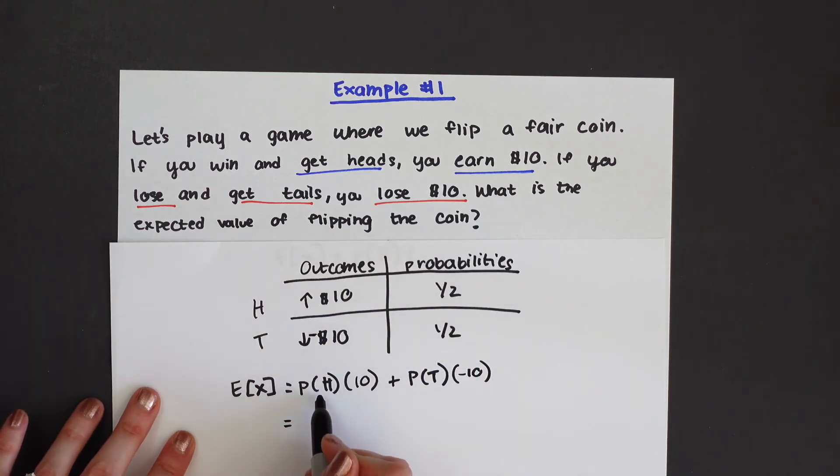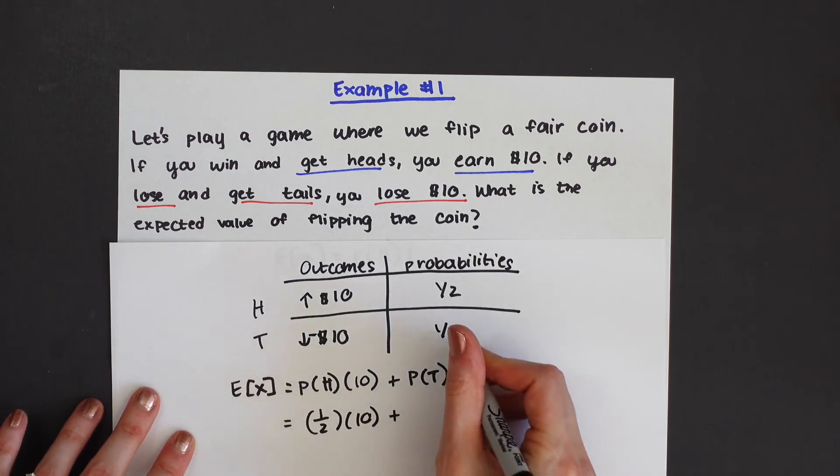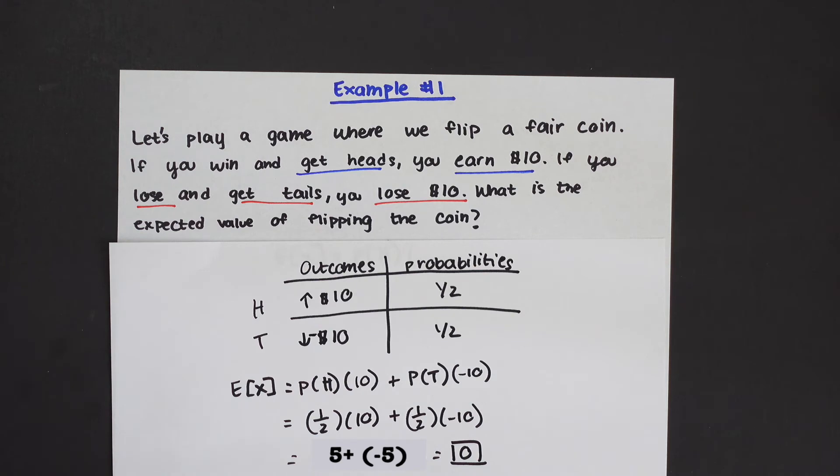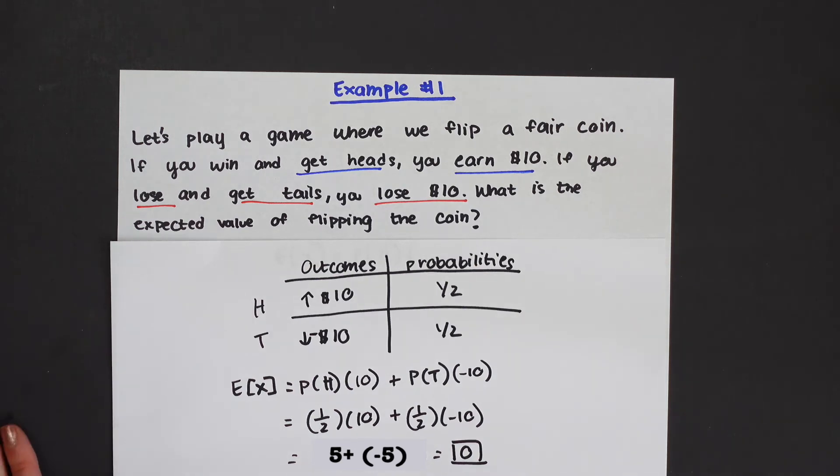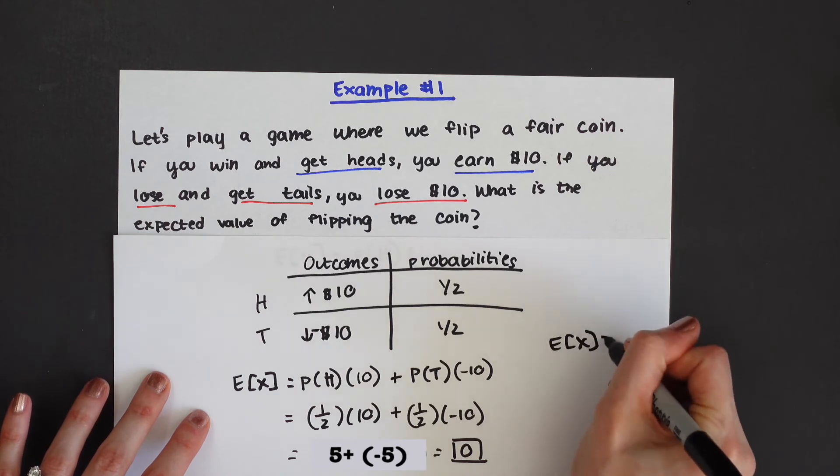Then we just gotta fill in. We know the probability of getting a head is one half times ten plus the probability of getting tails is one half times minus ten and you can see we're gonna get which will give us zero. So our expected value for this problem is going to be E[X] equals zero.